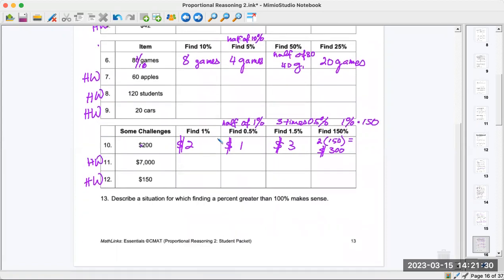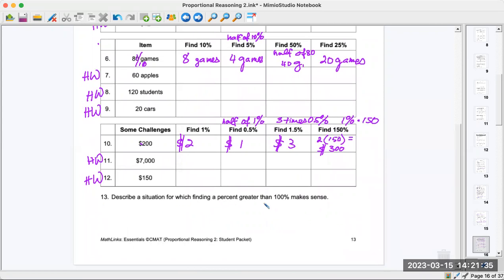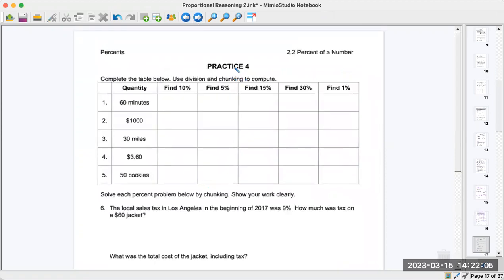That was page 13. Down here: describe a situation for finding a percent greater than a hundred percent. Sometimes they increase a cost of something by they triple the amount of what it used to cost. So then it would be a 300% increase, tripling something. It makes sense when things go up or go down. Sometimes they become cheaper. Rarely do they become cheaper.